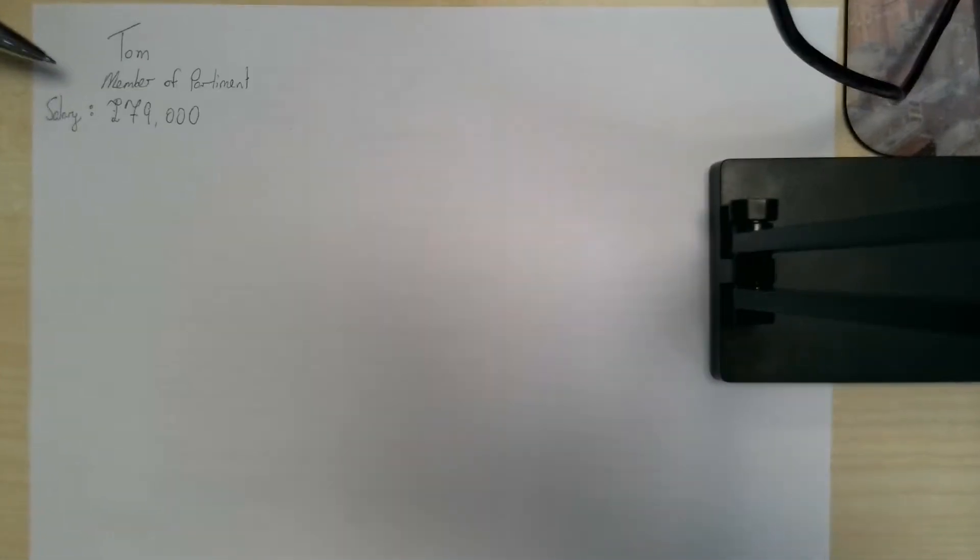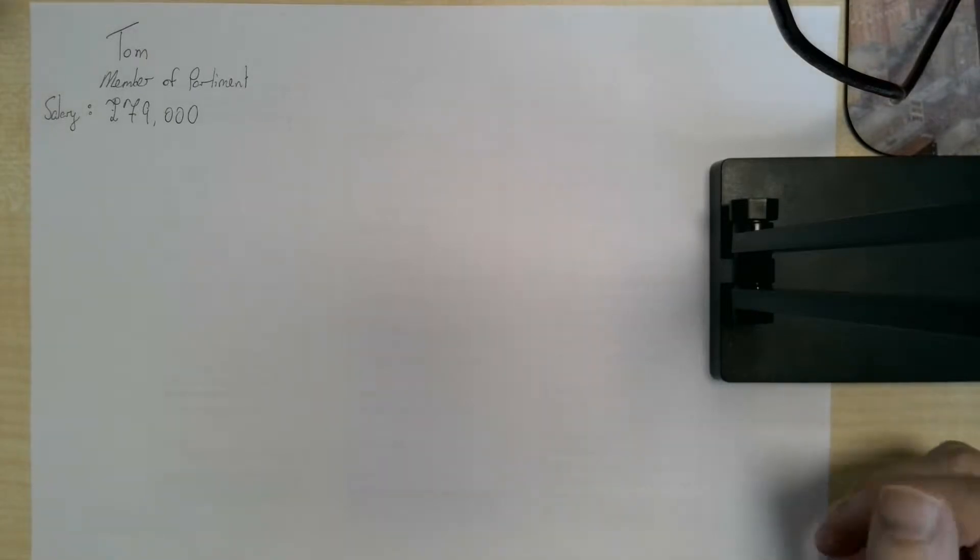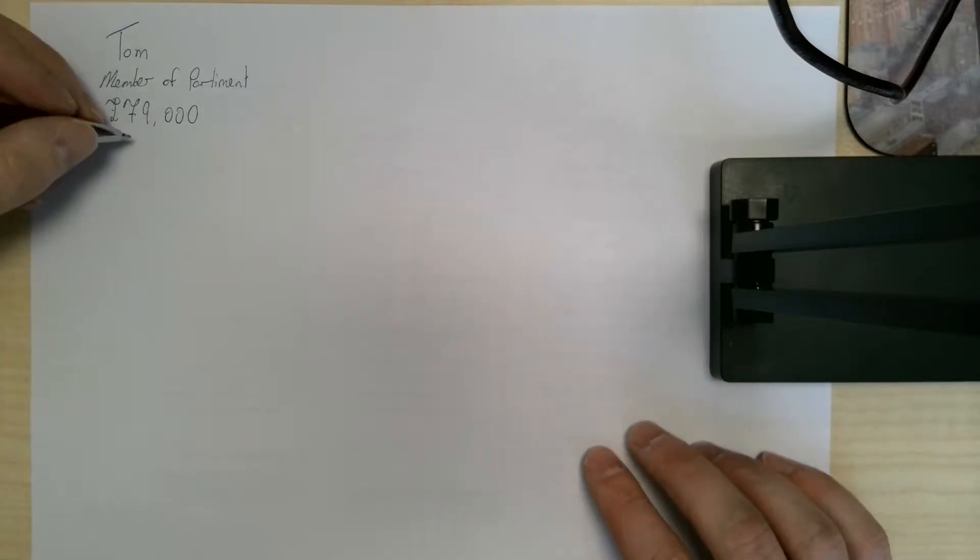In this video we're looking at calculating the amount of tax somebody needs to pay. In this example we've got Tom. Tom's a member of Parliament, an MP who works in Westminster, and his salary for the year is £79,000.